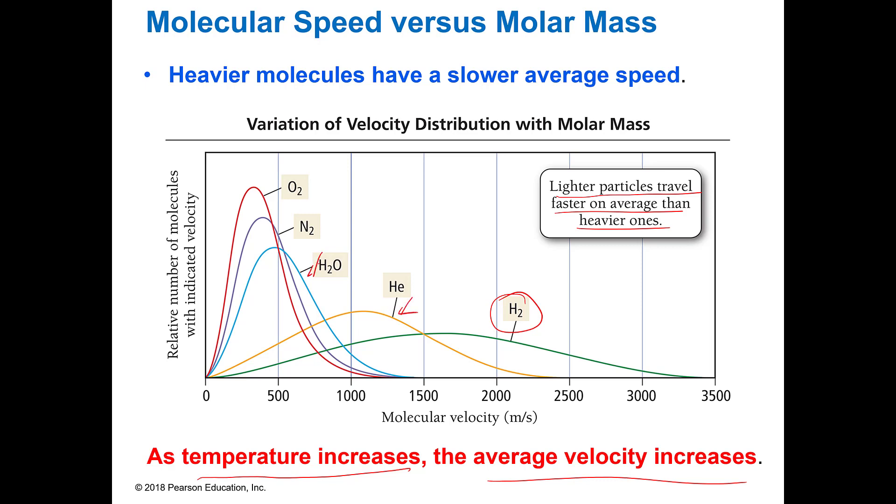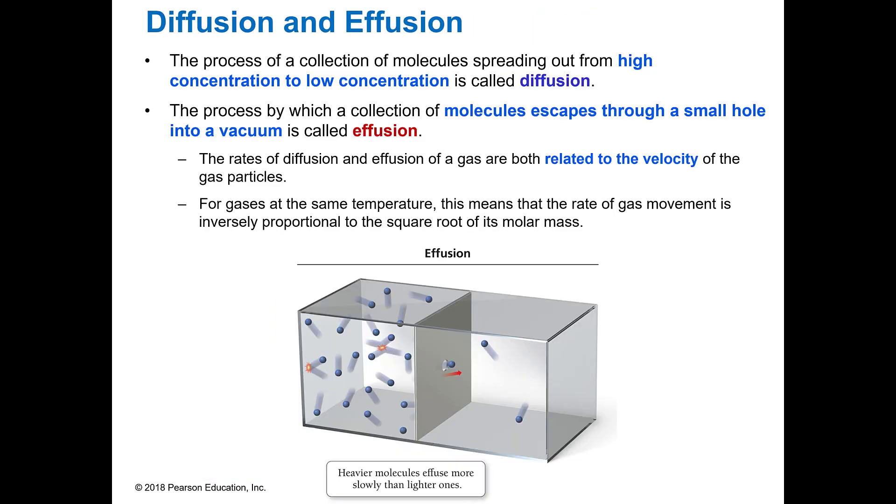And then you've got helium and then water, nitrogen, and oxygen. So the bigger your molecule is, the slower the average speed that it's moving. And so that's just a little tidbit to remember.